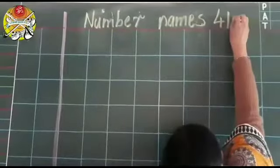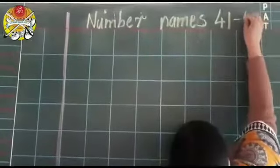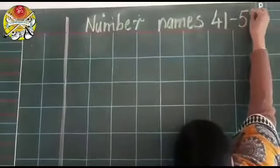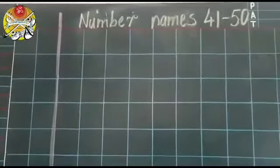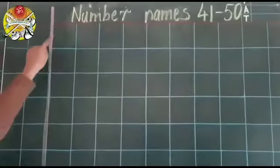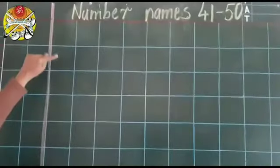41 little spacing and dash. And we will write 50. Okay. Now, we will leave the first line and write which number?